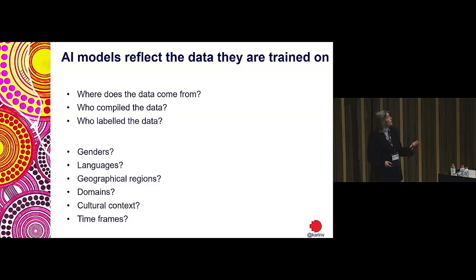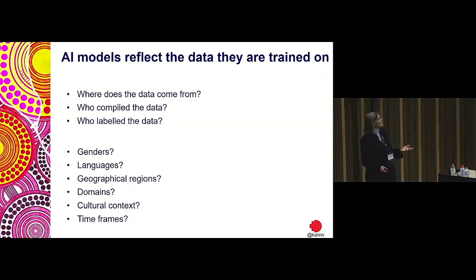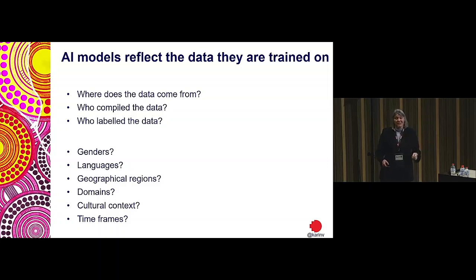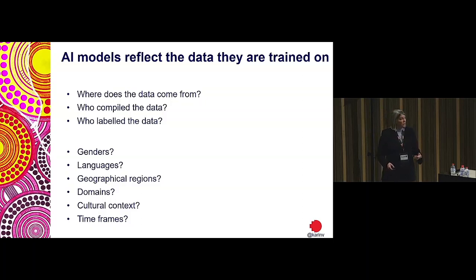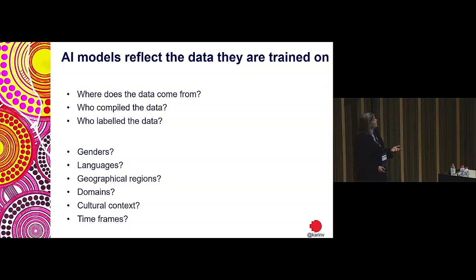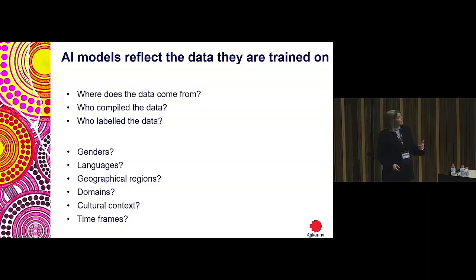We have to ask: where does the data come from? Who compiled it? Who labeled it? We talk a lot these days about generative AI and large language models trained in an unsupervised way, but the little secret OpenAI doesn't advertise broadly is that they use a lot of supervision from humans. So who's doing that supervision? Who's providing the good answers for prompts in training? What genders, languages, geographical regions, and domains of knowledge do they reflect?